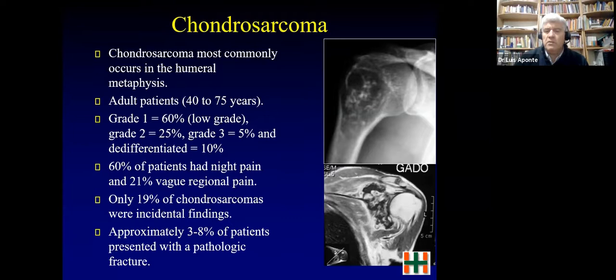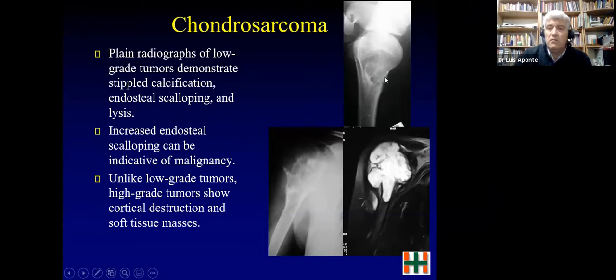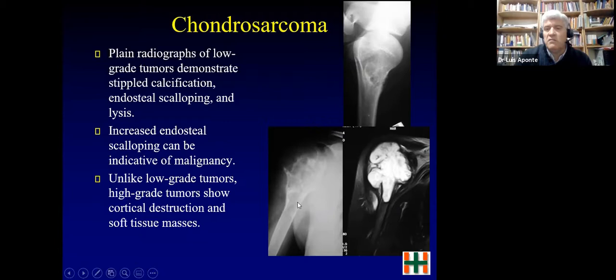On imaging, low-grade chondrosarcoma shows cortical erosion without a soft tissue mass, whereas high-grade shows cortical destruction with soft tissue expansion. Key differentiating features from enchondroma include endosteal scalloping and lysis. A high-grade tumor is obvious on imaging. We must be aware of this diagnosis in patients over 40. The main difference is the endosteal scalloping and lysis distinguishing low-grade chondrosarcoma from enchondroma.